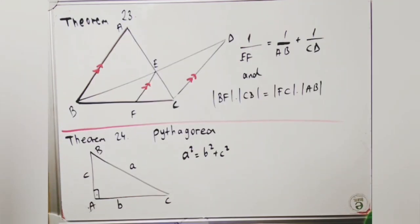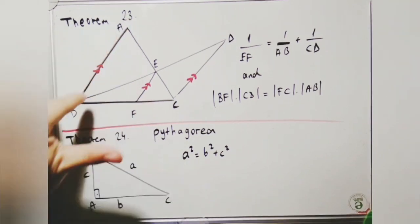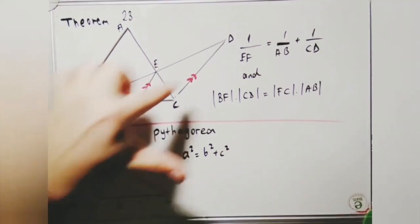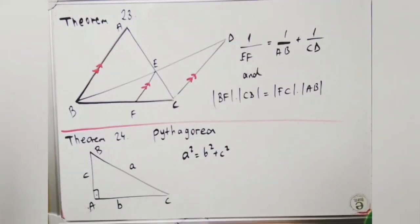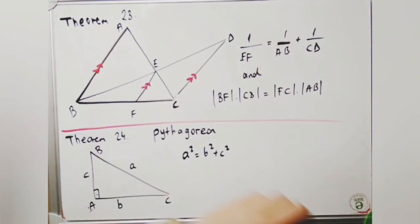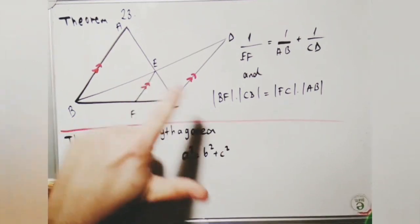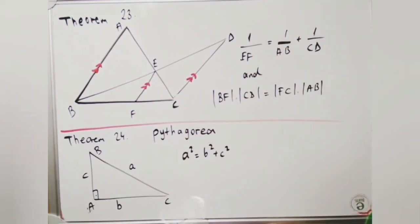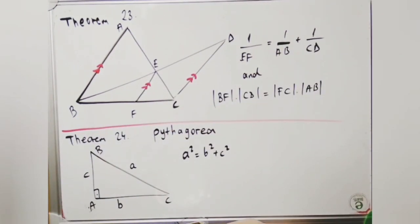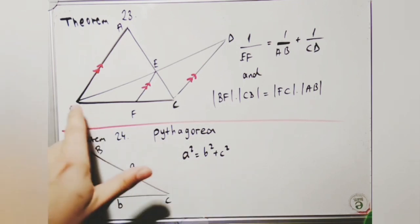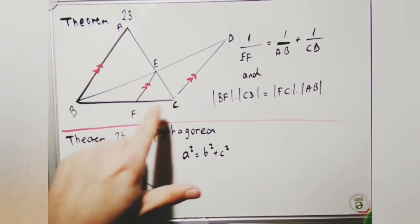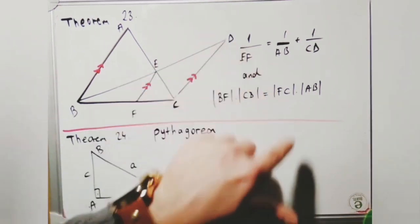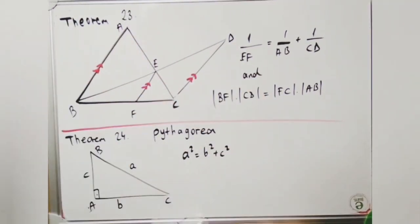In Theorem 23, if AB, EF, and DC are parallel to each other, then 1/EF = 1/AB + 1/DC, and BF × CD = FC × AB.